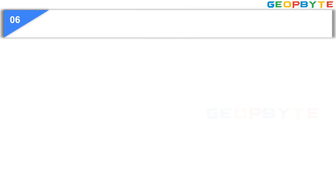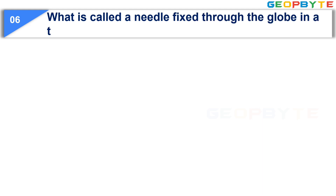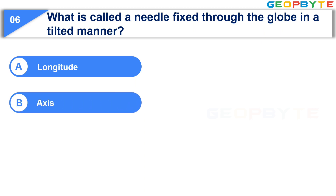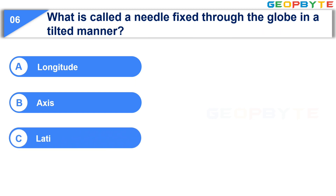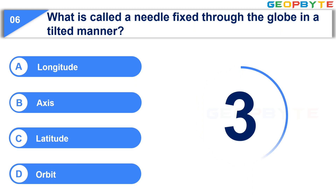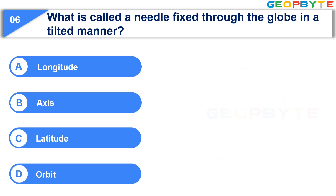Moving to the next question. What is called a needle fixed through the globe in a tilted manner? Option A: Longitude. Option B: Axis. Option C: Latitude. Option D: Orbit. Your time starts now. Your time is up and the correct answer is Option B: Axis.